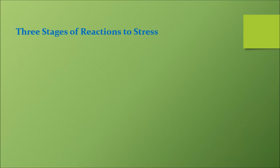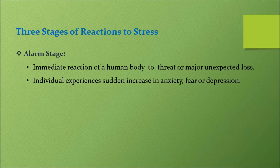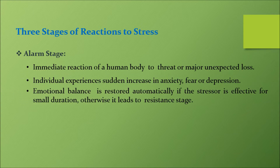The three stages of reactions to stress are: alarm stage, resistance stage, and exhaustion stage. The alarm stage is the immediate reaction of a human body to a threat or major unexpected loss. The individual experiences a sudden increase in anxiety, fear, or depression. Emotional balance is restored automatically if the stressor is effective for a small duration; otherwise it leads to the resistance stage.